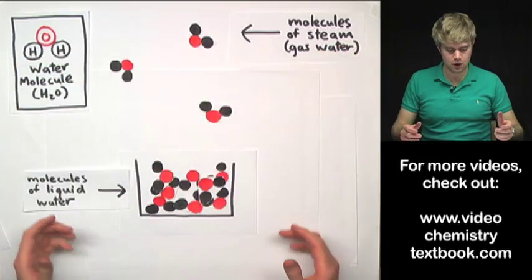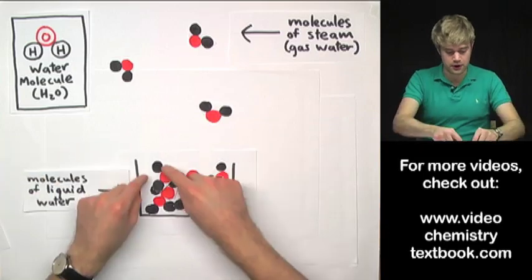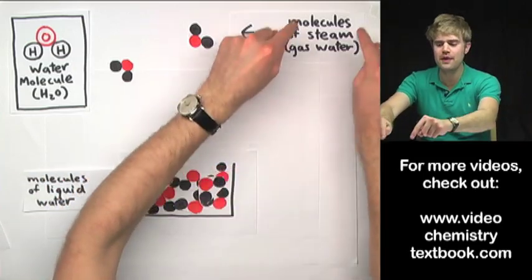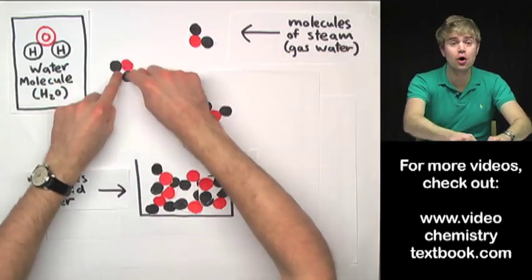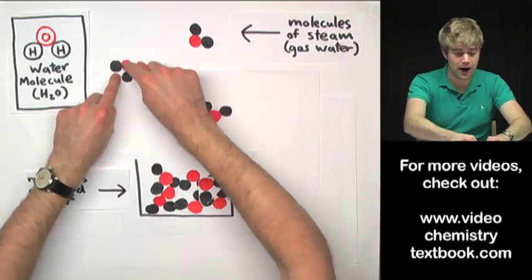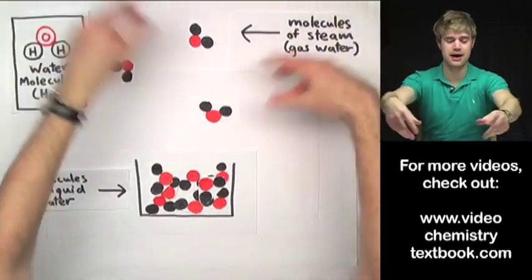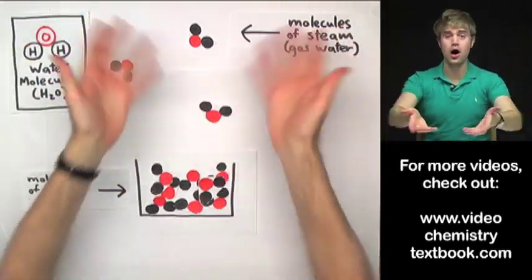So here's the main point. When they're liquid water the molecules H2O are packed really close together. But when they're gas water or steam they're still molecules of water, one oxygen and two hydrogens. It's just that now they're not as densely packed and they're flying around in the air above the liquid.